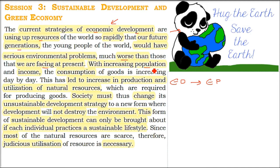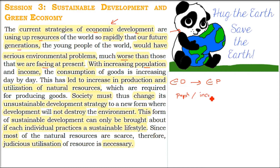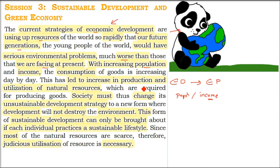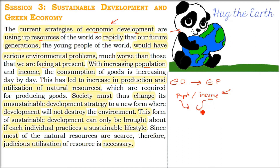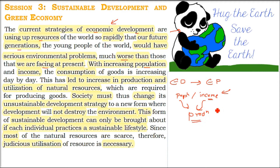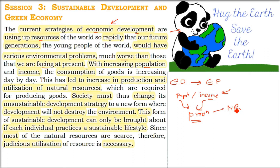Just think what will happen to our future generations. Population is increasing, income is also increasing, so people have money now. They want goods, they want luxury, they want everything that makes their life easy. When there is demand, there will be supply, and that supply will come from production and manufacturing — leading to the exploitation of natural resources. This is how this works.